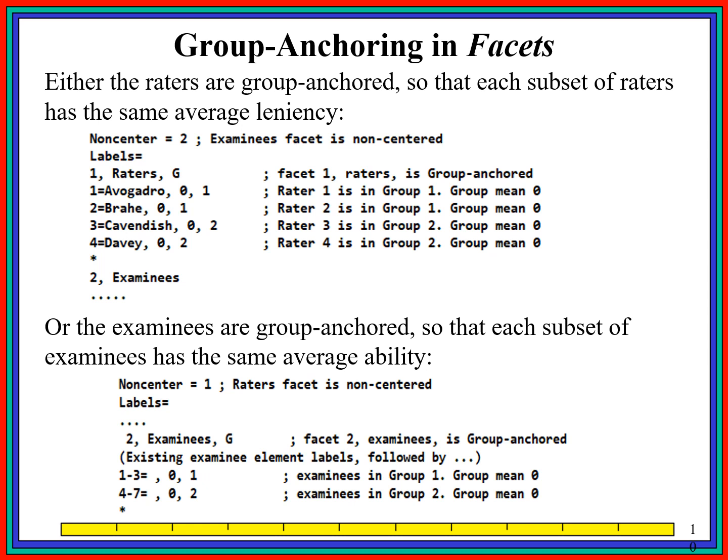We could alternatively say it's the examinees that have the same mean abilities — each group or subset of examinees has the same ability on average — in which case we do exactly the same thing. We group anchor the examinees and FACETS will do this for us. This group anchoring is very convenient, though we do have to make assumptions, as the data will not tell us.